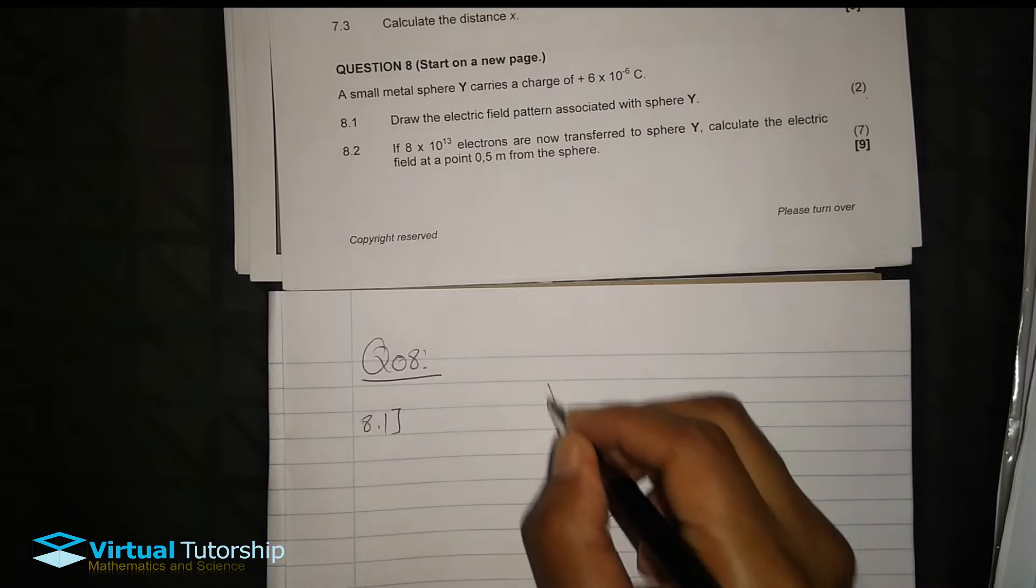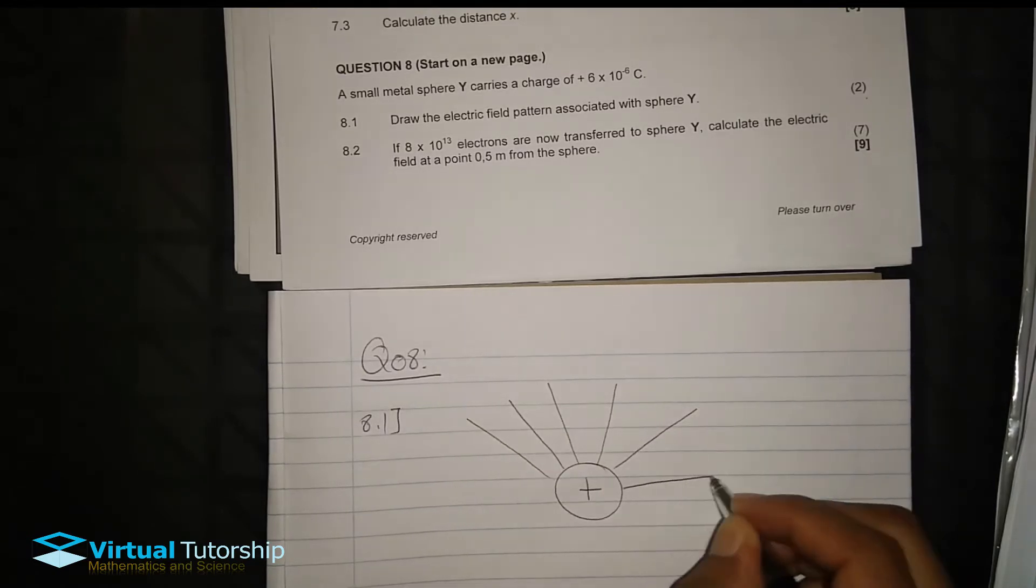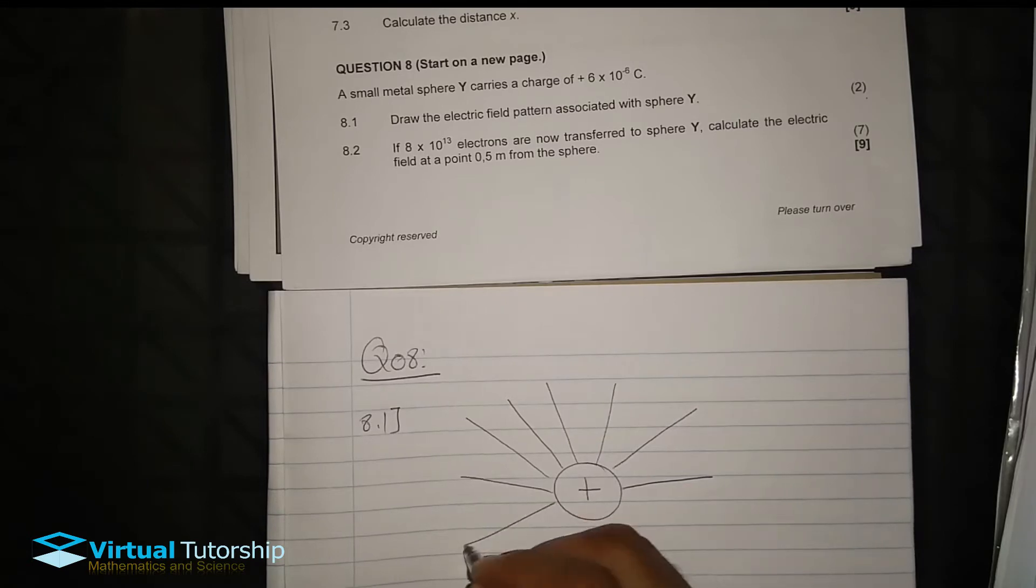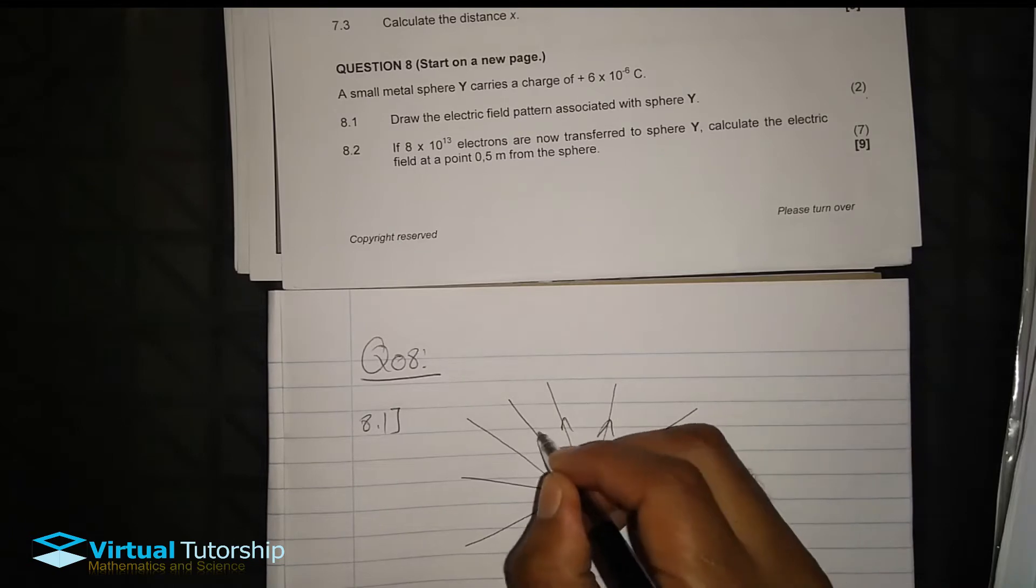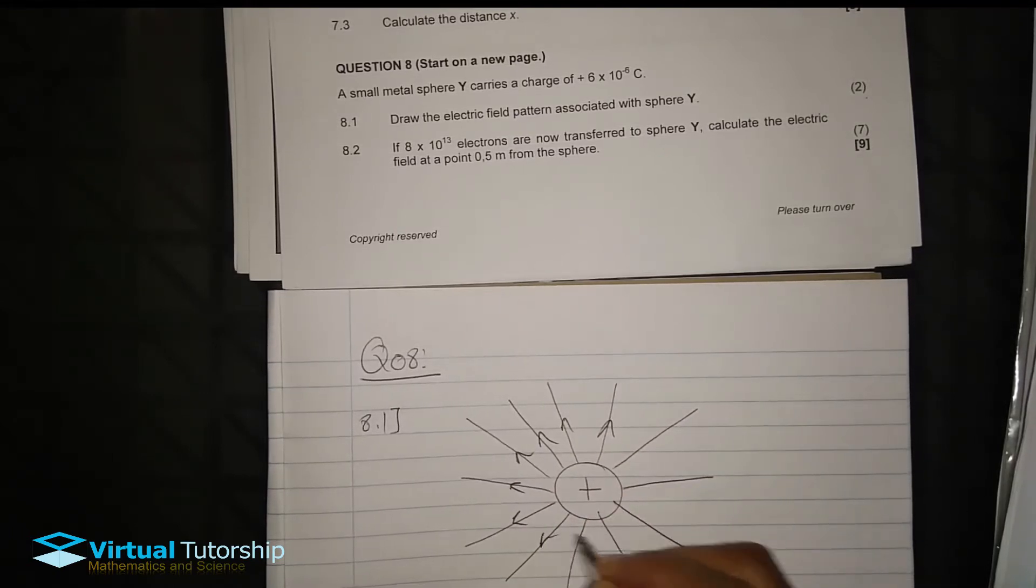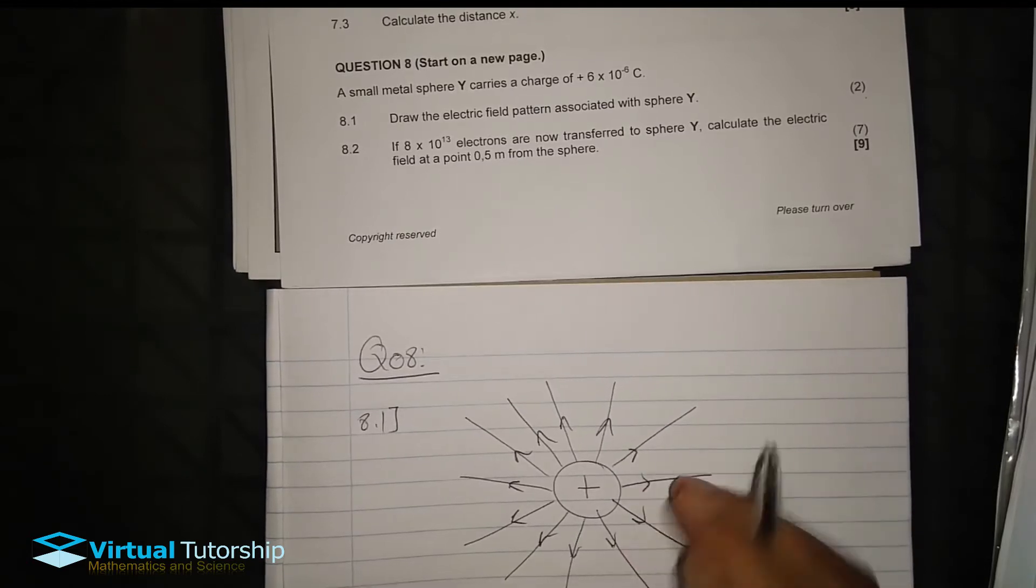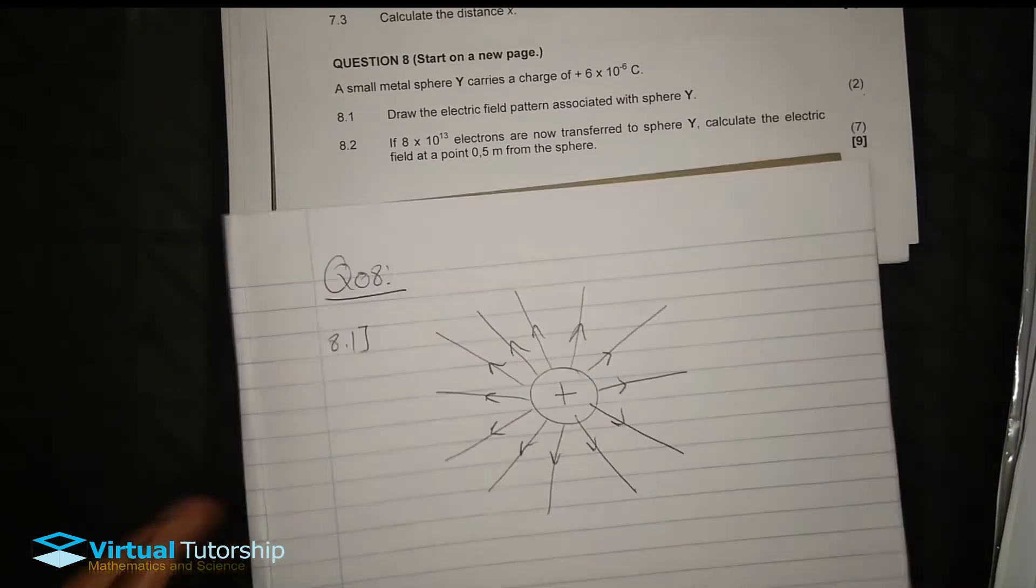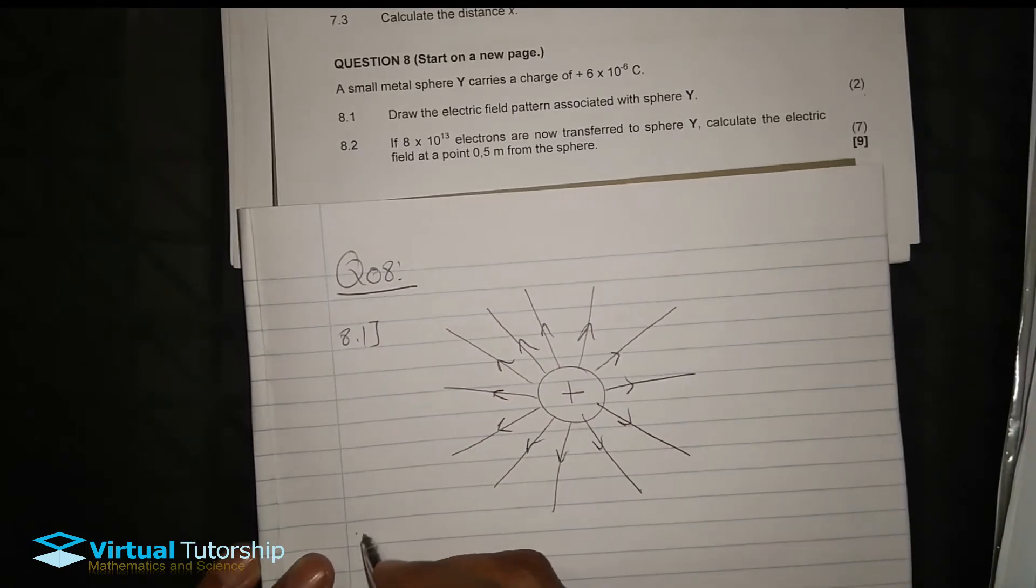And then, this is the number of electric field lines. Electric field lines, lines representing electric field here too. Therefore, they will be pointing away from the charge. Away from the charge. Right, away from the charge. And then for a negative charge, it's towards the charge.